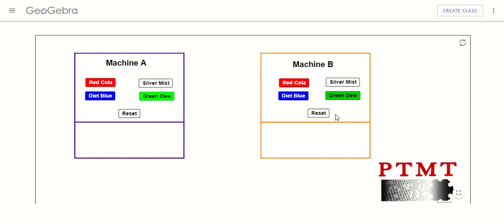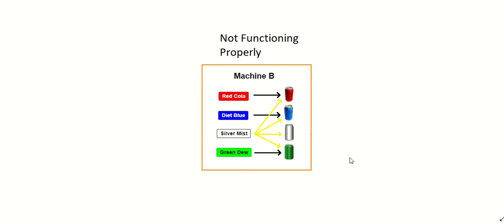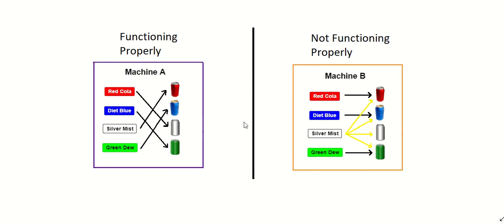So what do you think? Is machine B functioning properly? It turns out machine B is an example of something that's not functioning properly. Our definition of functioning properly is that it's consistent. When I press the silver button, sometimes I get a red cola, sometimes I get a diet blue, sometimes I get a silver mist, and sometimes I get a green dew. Since this is inconsistent, machine B is not functioning properly. In summary, when we say something is a function, for every input we always get the same output — every input has one output. When something is not functioning properly, that means an input can have multiple outputs.